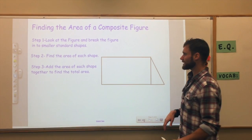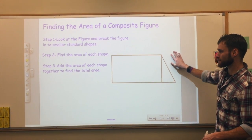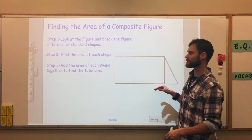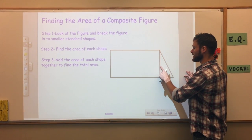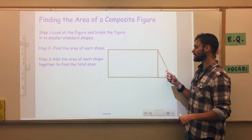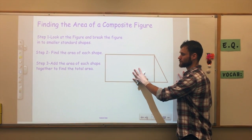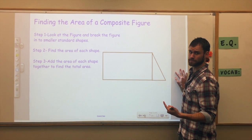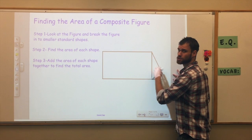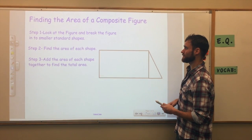That's how you find the area of a composite figure on grid paper. If it's not on grid paper, you have to look for certain things. First, look at the figure and break it into smaller standard shapes — draw a line and recognize, for example, a rectangle and a triangle put together. Then find the area of each shape using the correct formula: a rectangle is length times width, a triangle is one half base times height. Find each area and add them together to get the total.